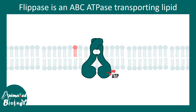Now let's talk about another type of ABC ATPase found in the plasma membrane of mammalian cells: flippase. Flippase is responsible for the heterogeneous or biased localization of particular phospholipids to one side of the membrane. Its job is to hydrolyze ATP and flip a particular phospholipid to one side of the membrane. In this example, you can see a particular lipid is localized to the inner side of the membrane from the outer side, and this is done by flippase.